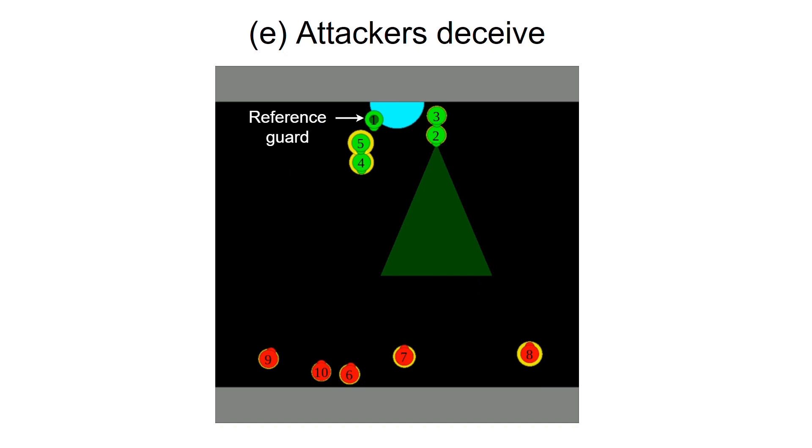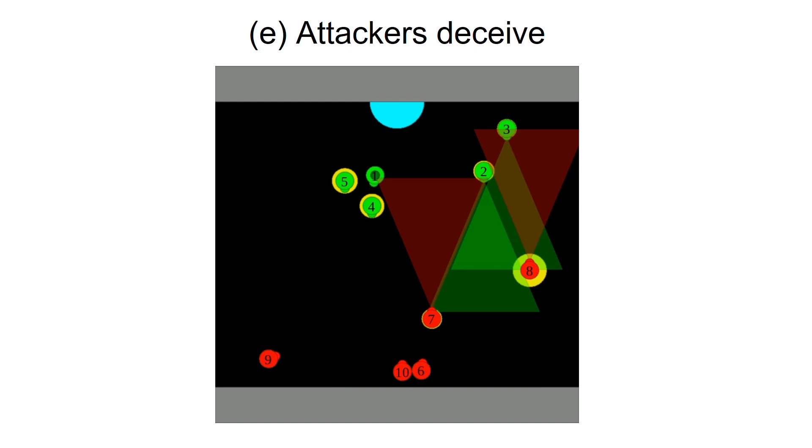Agent one initially paid roughly uniform and low attention to all the attackers when they were far away. Then it started paying more attention to agent eight which was attacking aggressively from the right. Little did it know that it was being deceived by the clever attackers.